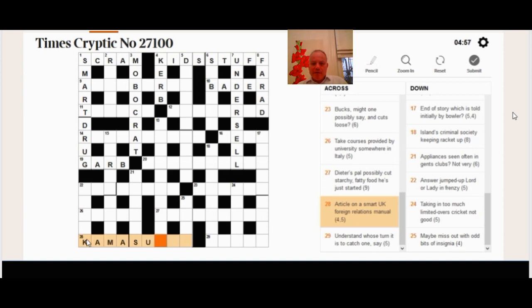Now, 20 across, article on the smart UK foreign relations manual. Well it's an anagram, as foreign indicates, of A, A smart UK. Or rather it's A written after an anagram of A smart UK. And relations manual is the definition of Kama Sutra. It's almost magical.